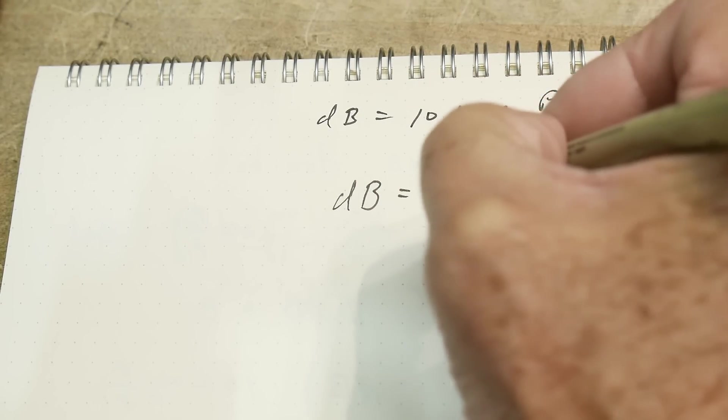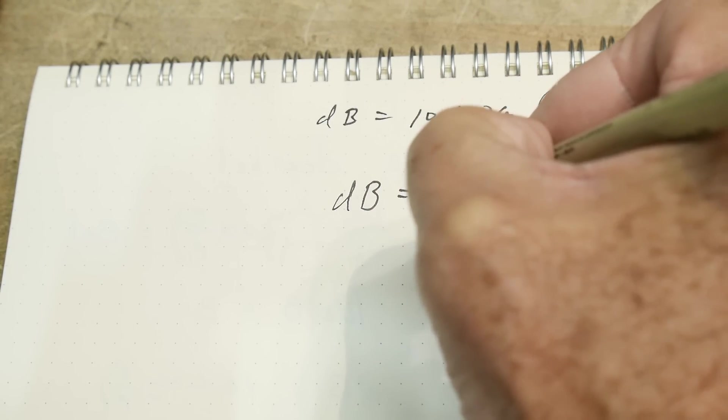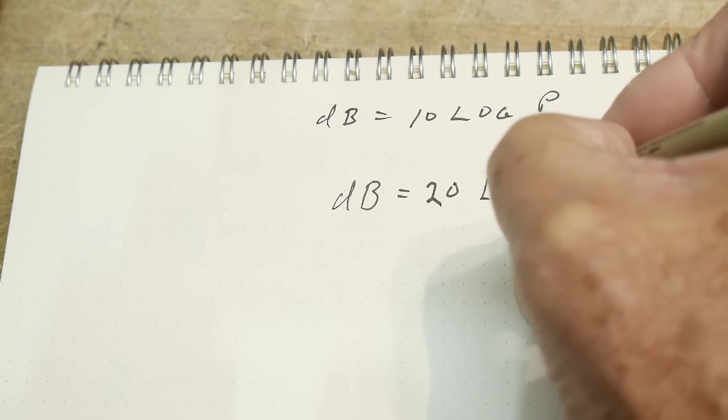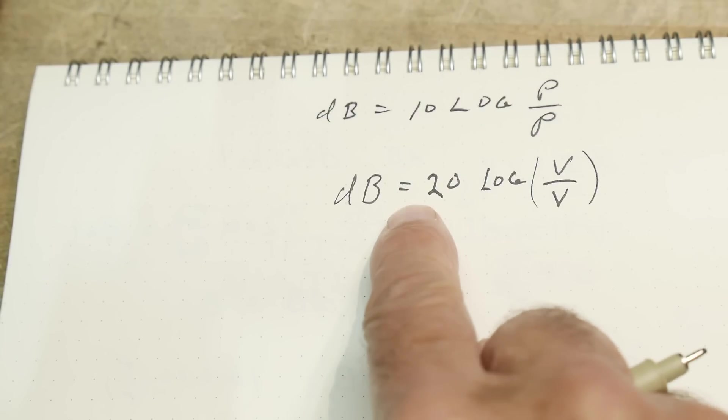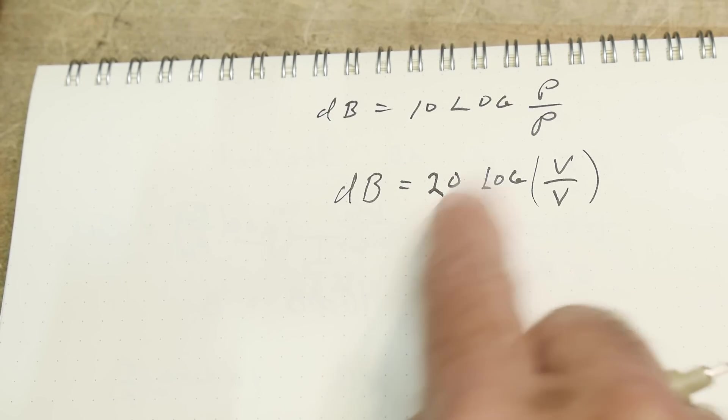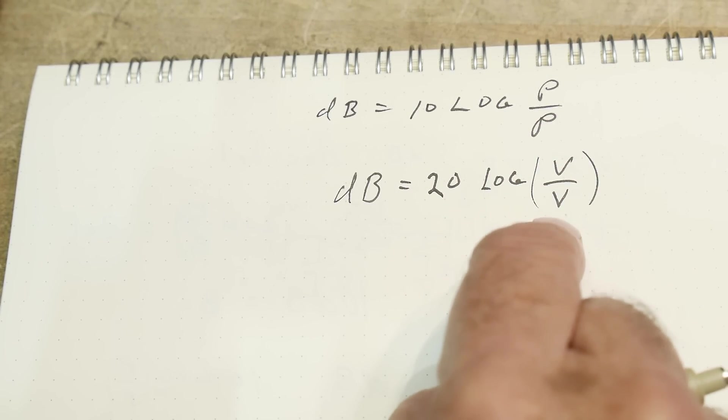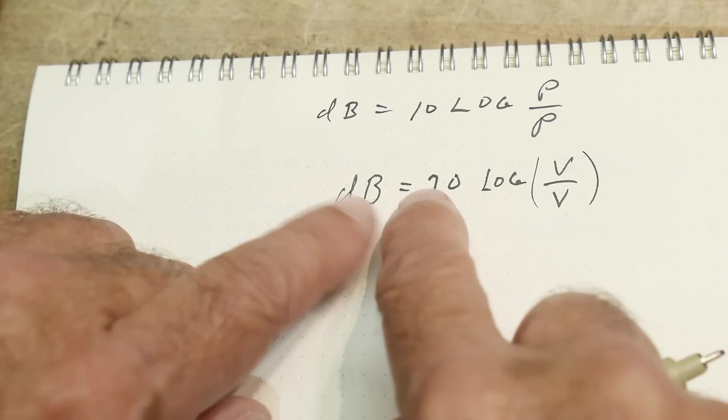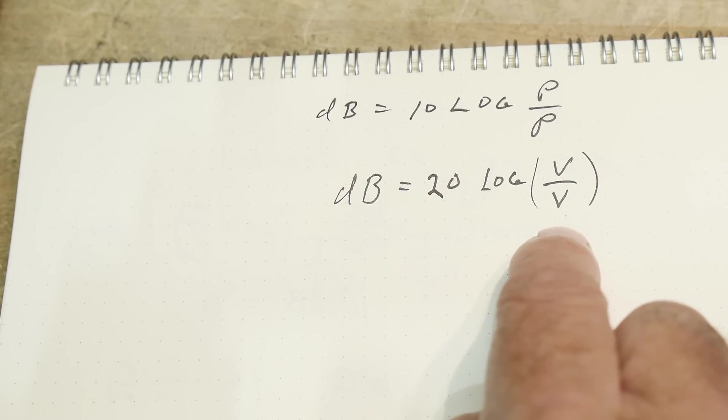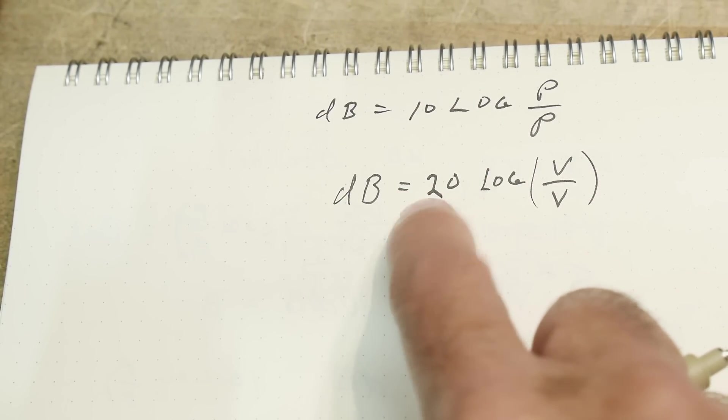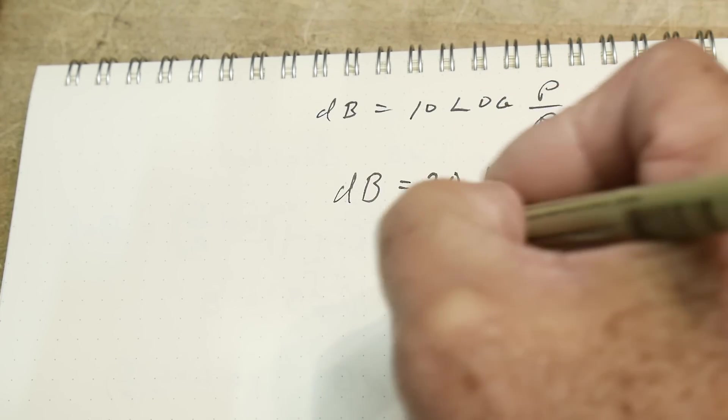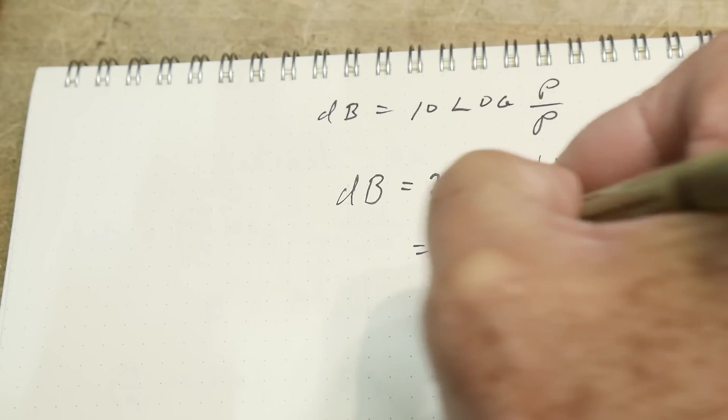You bring the 2 out and this becomes 20 log of V over V. You don't square them out here, you've already squared them. The 2 out here is the square over the square. If you put the 20 out here then it says V over V, so it makes it easier. Now we just have 20 times log.